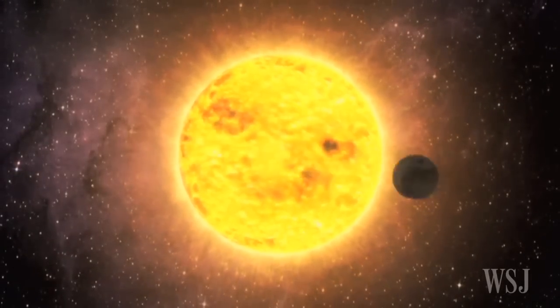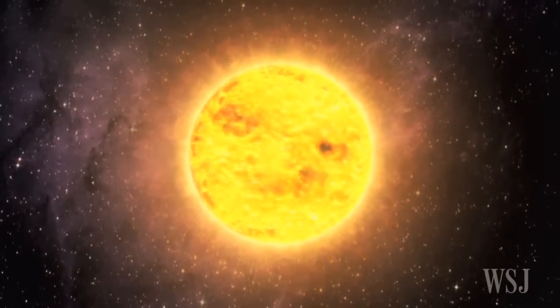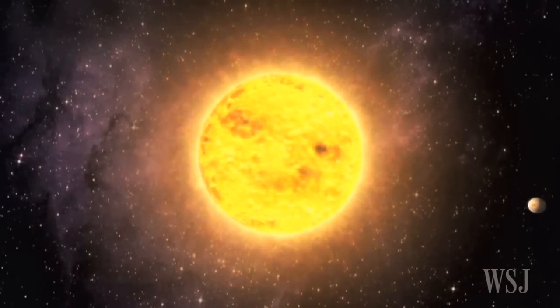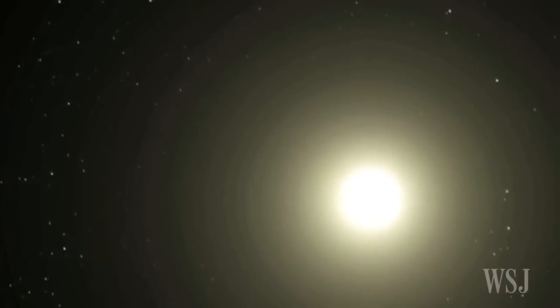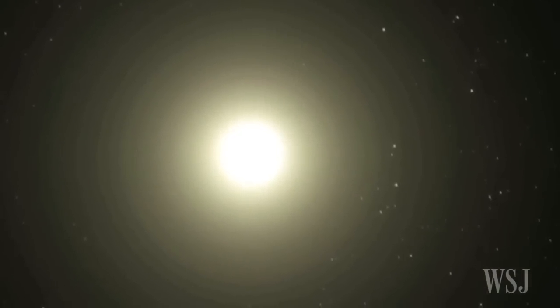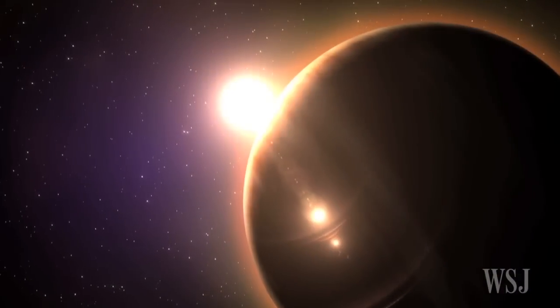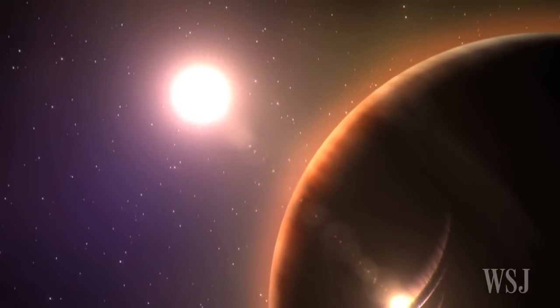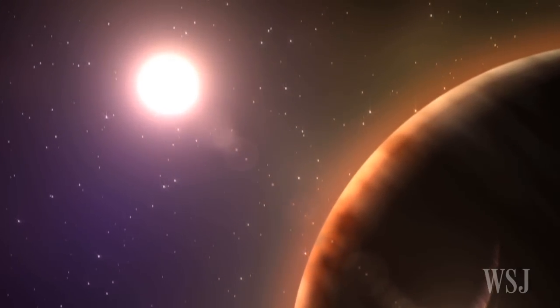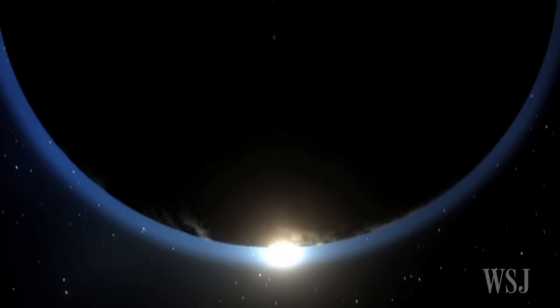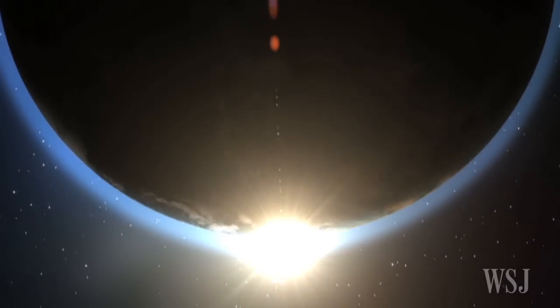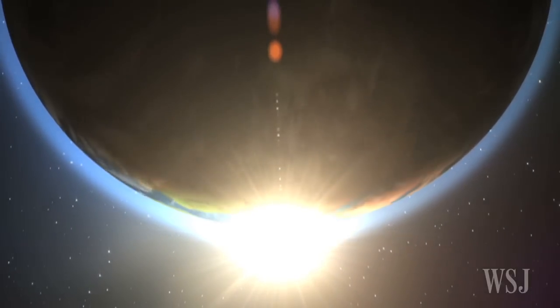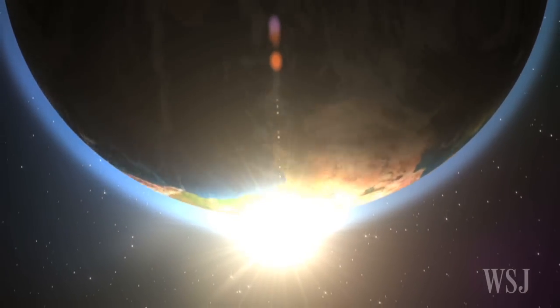The newly discovered planet may also offer a glimpse at Earth's own future, the scientists believe. Kepler-452b's host star is thought to be 1.5 billion years older than the 4.5 billion-year-old sun and growing hotter and brighter as part of its natural evolution. The star's increasing energy might be drying out the planet as it ages, an effect scientists believe the evolving sun could have on Earth a billion or so years from now.